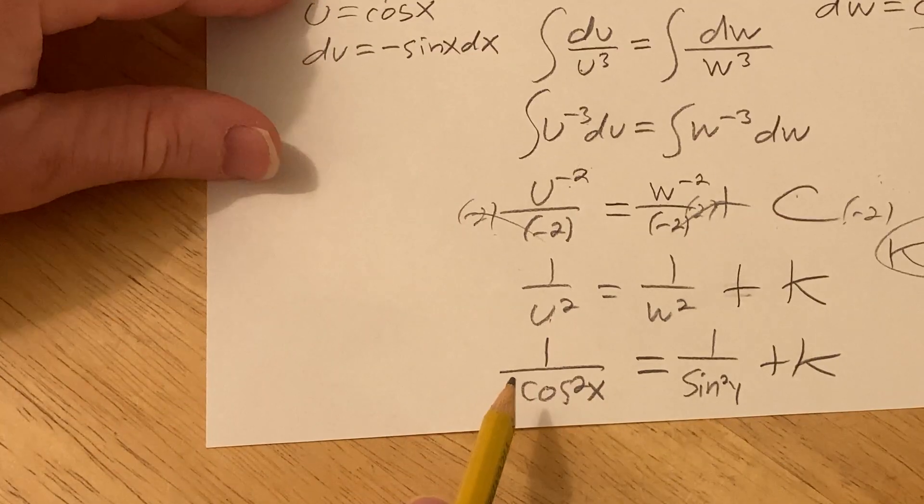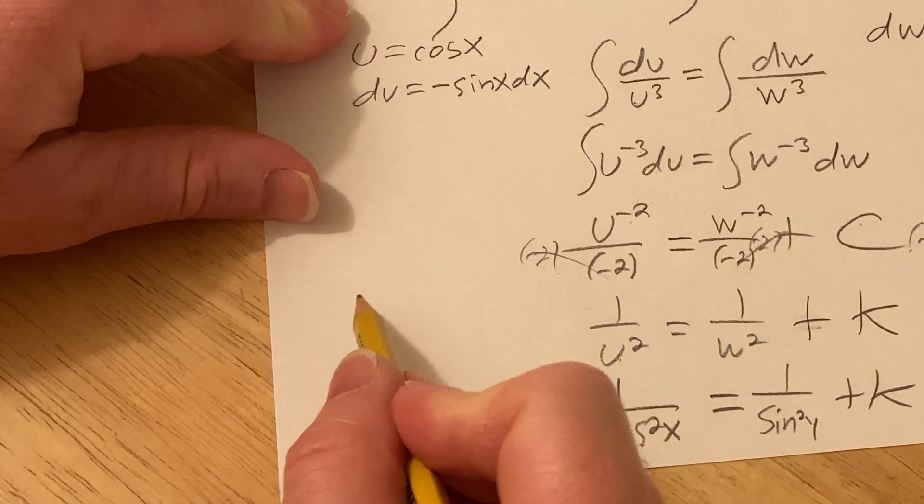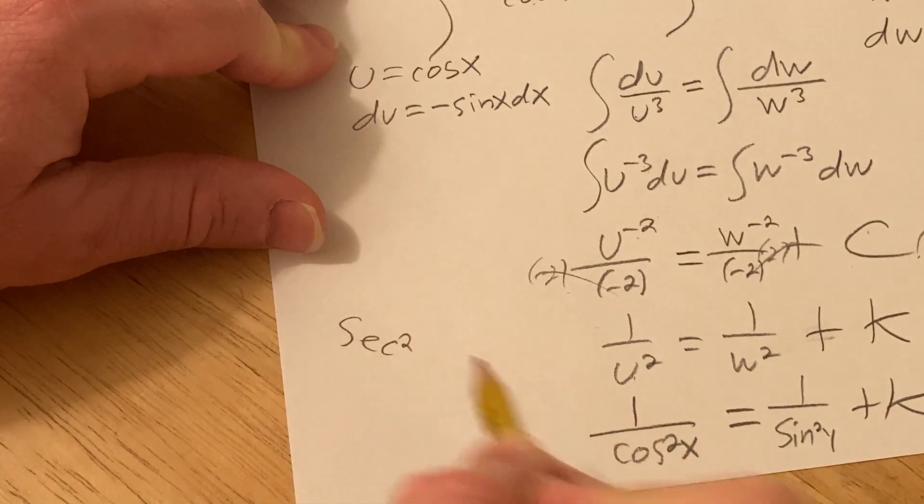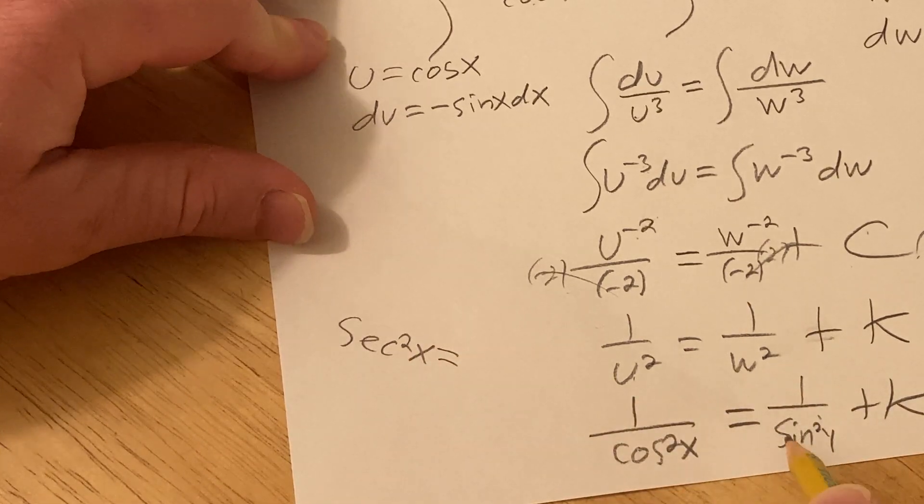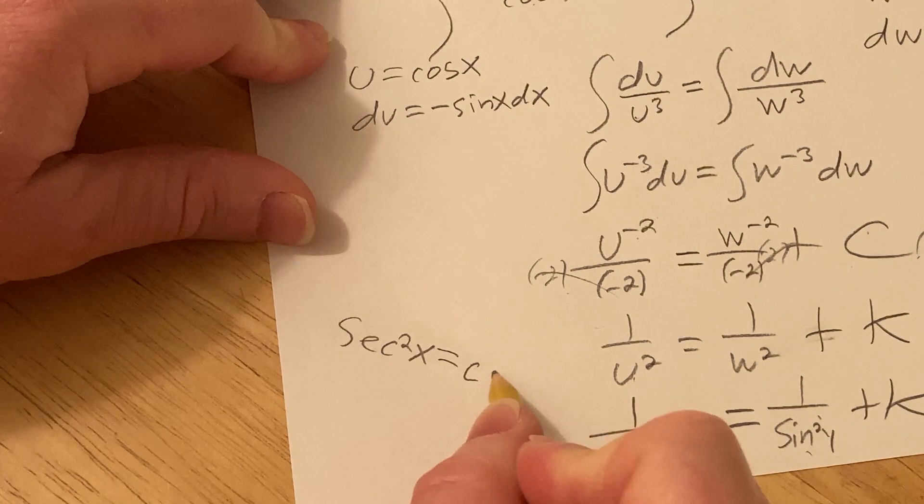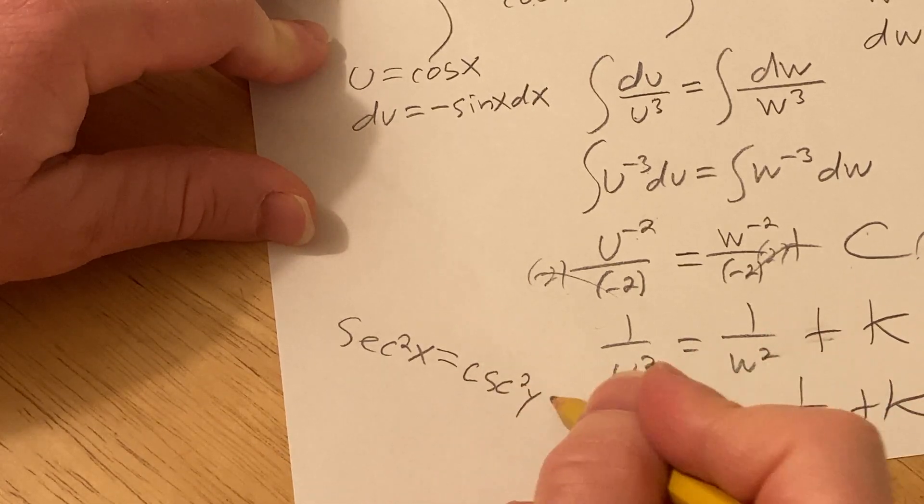And if you like, you can go to other functions, 1 over cosine is secant, so you can write the answer as secant squared x equals, and then 1 over sine is cosecant, so cosecant squared y plus k.